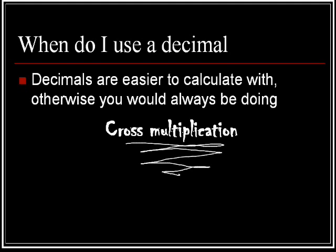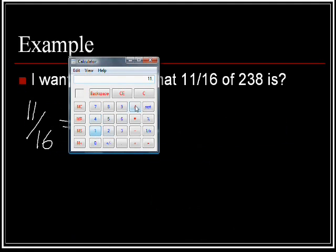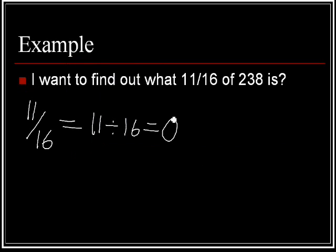Here's a quick example. If I wanted to find out what eleven sixteenths of 238 is, well, my first step, I'm going to convert my fraction into a decimal. So, eleven is the same as eleven divided by sixteen, which will give me eleven divided by sixteen equals .6875. So, zero point six eight seven five. And then I'm going to multiply this by my amount.